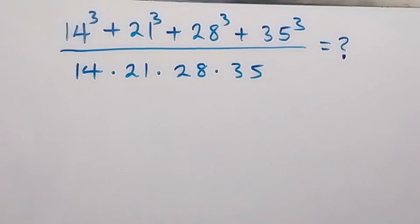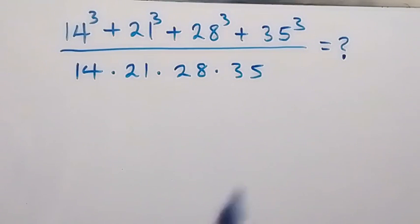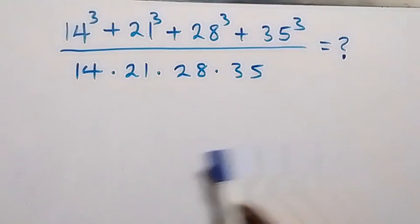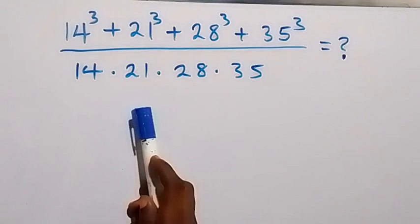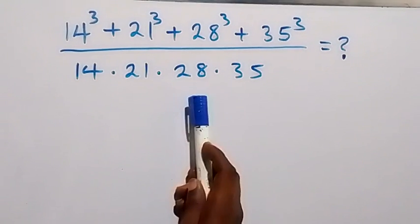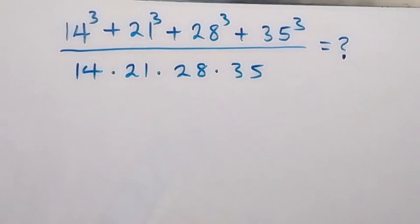Hello, you are welcome. How to solve this nice exponent problem. We have 14 cubed plus 21 cubed plus 28 cubed plus 35 cubed, all divided by 14 times 21 times 28 times 35. Now here we can equally write 14 as 7 times 2.